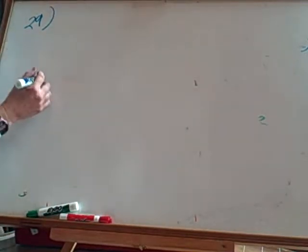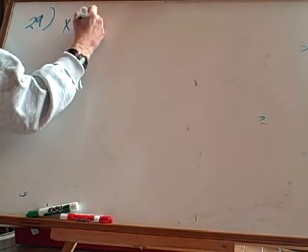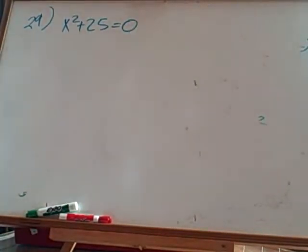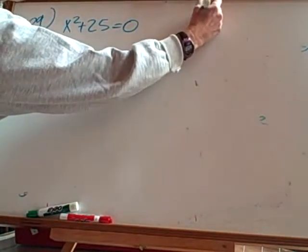We're doing number 29 on the complex number worksheet. It is x² + 25 = 0. Now there's a couple ways to do this. Remember when we had x²